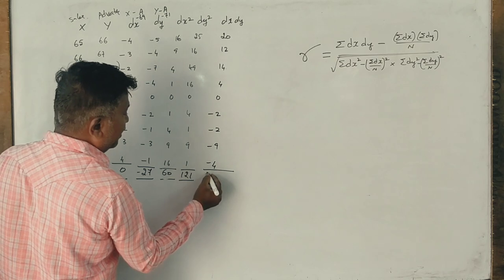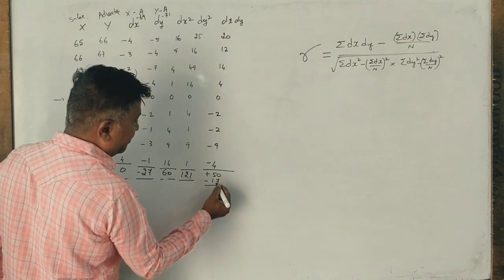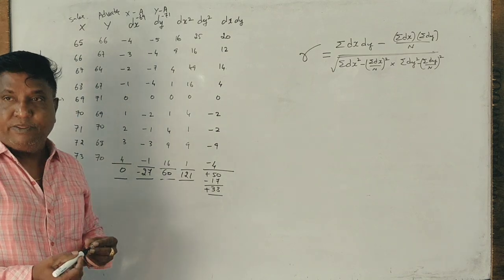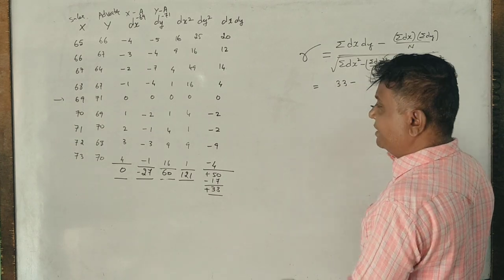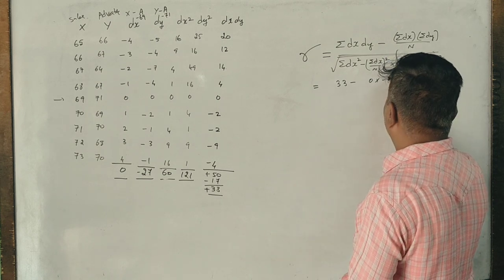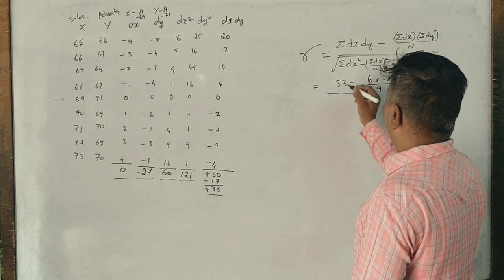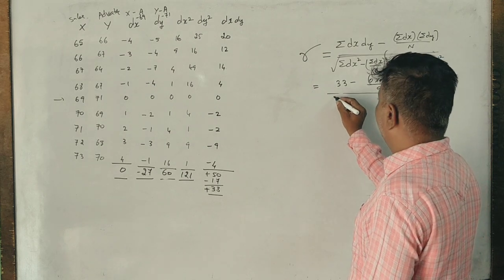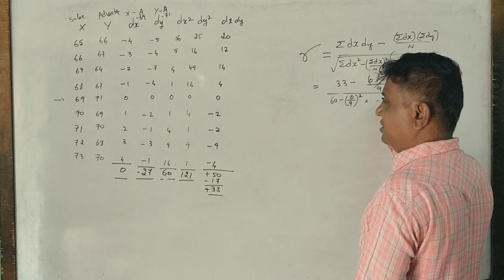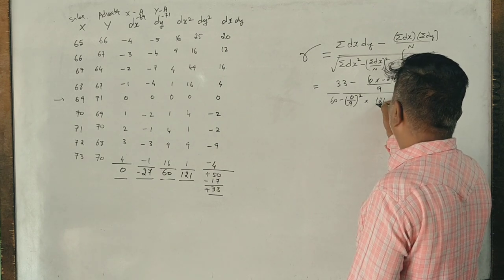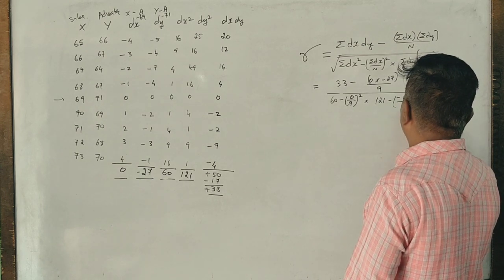50 plus minus 0, 4, 8, 9, minus 3, plus 33. Here is the formula. Here is 33 minus, summation dx is 0, summation dy is minus 27, and n is 9. Here, dx square is 60 minus 0 divided by 9 whole square into 121 minus minus 27 divided by 9 whole square.